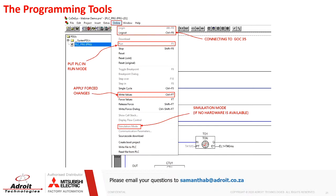If the PLC is in run mode you can test and simulate your program; if stopped, nothing will happen. There is also a write values function — whenever you force a data entry or set a bit, the GOC will not accept that change until you write the values to it. Below that is simulation mode, which is handy if you want to test a program or test the functionality of this product prior to purchasing, as you do not need any hardware for simulation mode — it is purely software.